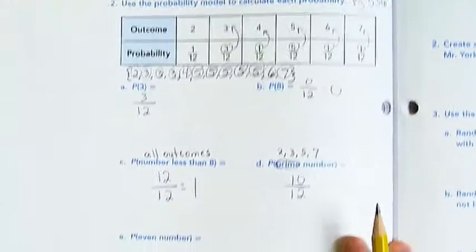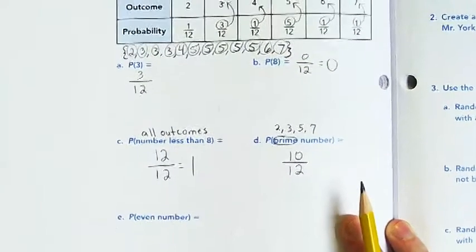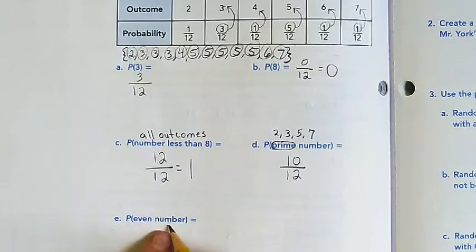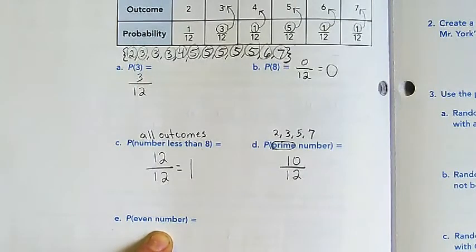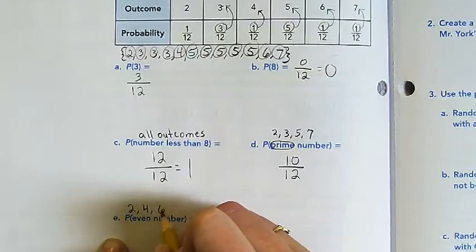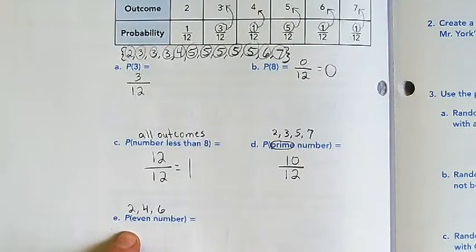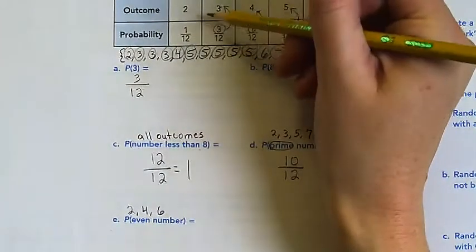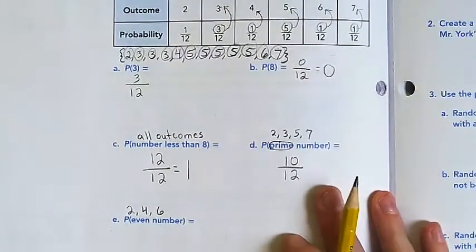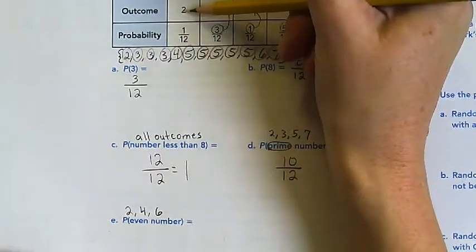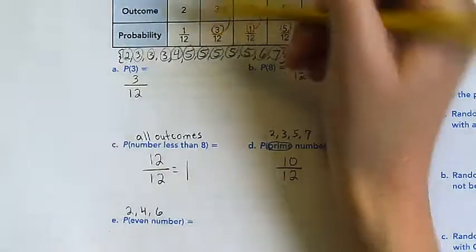The last one, E: The probability of picking an even number. What are even numbers? Two, four, and six. Let's use our probability model. The probability of getting a two was one twelfth.